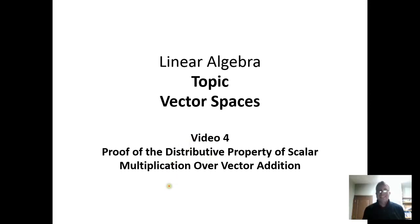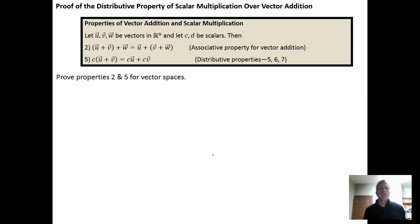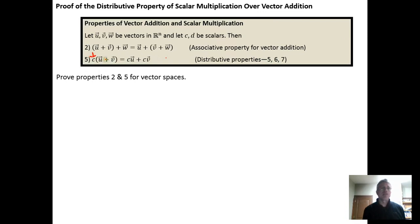In this video we're going to show a sample proof of the distributive property of scalar multiplication over vector addition. The claim is that the scalar times the sum of two vectors is the same as the sum of the two scaled vectors.